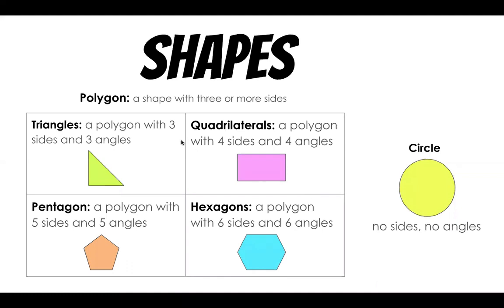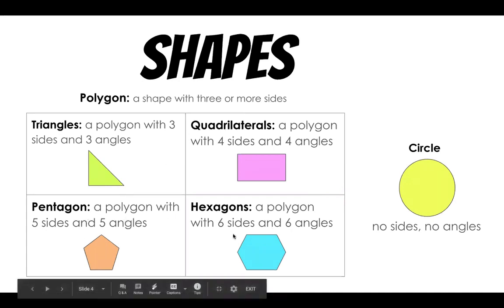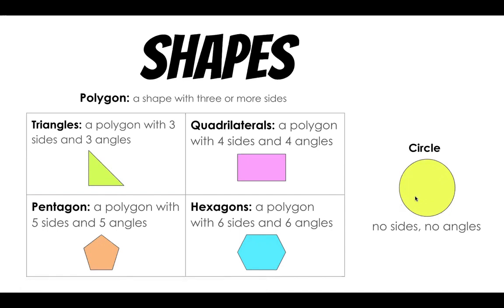First, let's review those shapes. A polygon is a shape with three or more sides. Triangles, quadrilaterals, pentagons, and hexagons are all polygons. A circle is something we did not talk about in our shape lesson, but I know all of you know what it is. A circle is not a polygon because it has no sides and no angles, but it still is a shape that we can break up into fractions.